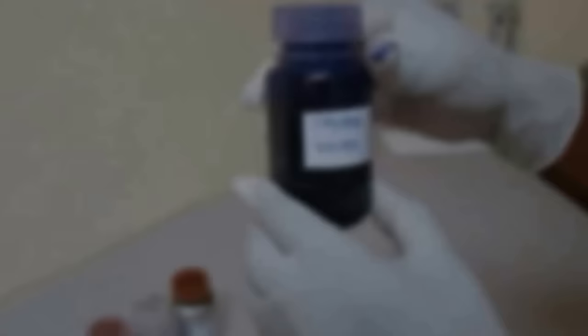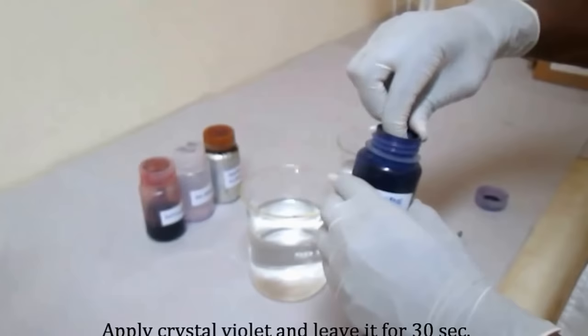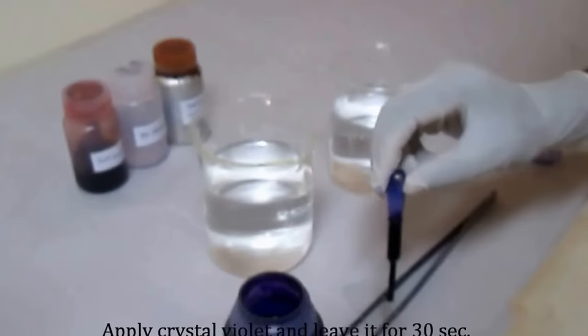Crystal Violet. It is blue in color. It acts as a primary stain. It stains both gram-positive as well as gram-negative bacteria. Apply it on the smear and leave it for 30 seconds.